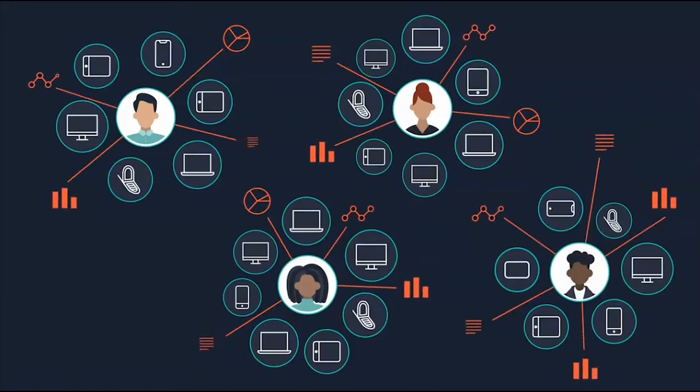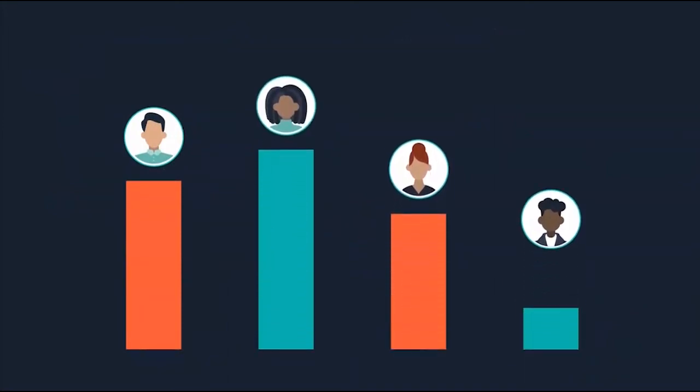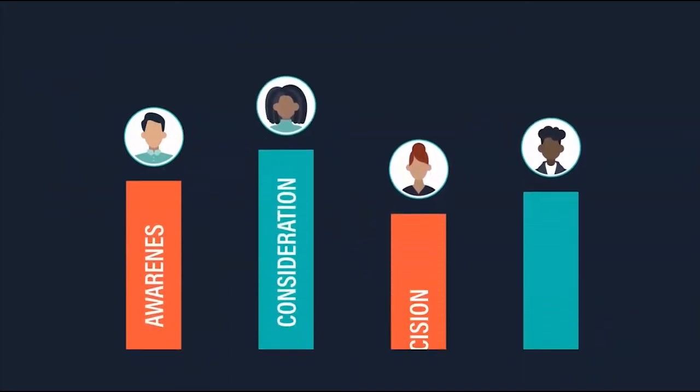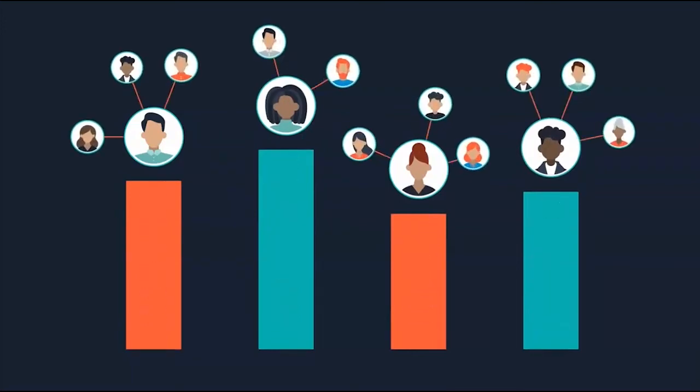Next, 6sense uses AI to identify which of those accounts are the best fit compared to your ICP, where they are on the buying journey, how engaged they are, and the makeup of the buying center.